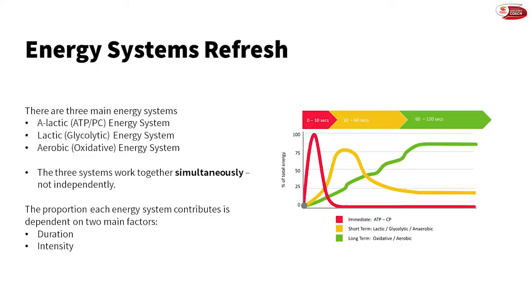Let's recap some of the basics. Our three main energy systems are the alactic, lactic, and aerobic. As we go through, we may reference the alactic as the ATP-PC, likewise the lactic as the glycolytic, and we'll try to stick with aerobic for the aerobic energy system. What once was thought to operate like a manual car — with each system working as an independent gear, switching from one to another as our exercise progresses — we now appreciate not to be the case. Rather, all three systems work simultaneously, where it's just the percentage contribution of each that varies.